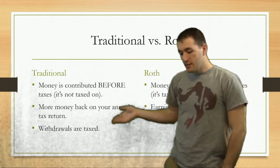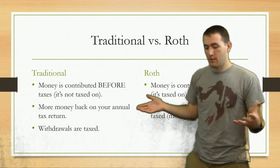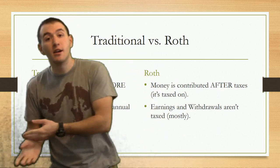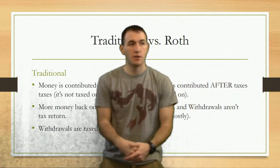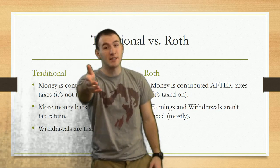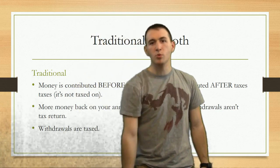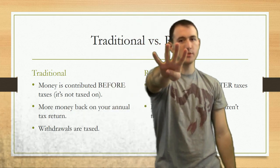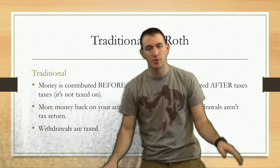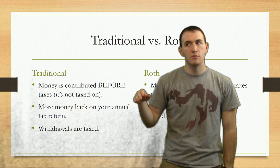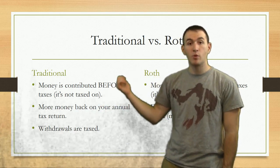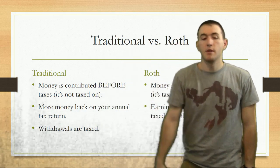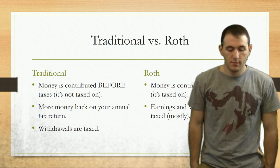The other benefit of traditional is that the growth on your contributions is not taxed until you withdraw it at retirement age. There are rules called RMDs — required minimum distributions — and the general rule is when you hit 70, you should start withdrawing 4%. Just remember that 4% at age 70. When you withdraw from traditional, you will pay taxes on it because you didn't pay them when you first got the money, which is totally fine — the government has to be paid eventually.